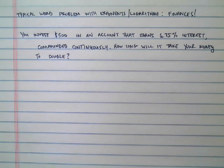Let's say that you invest $500 into some kind of bank account, and that bank account is a ridiculously high 6.75% interest, and it's compounded continuously. The question is this: How long is it going to take before your money is doubled?